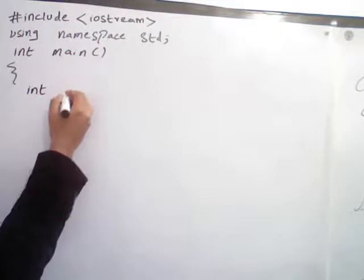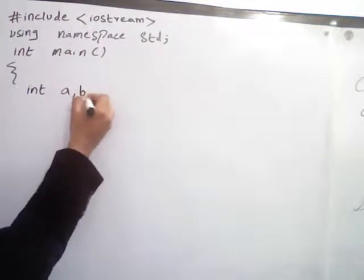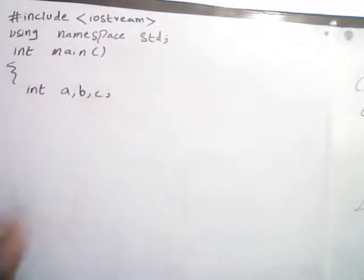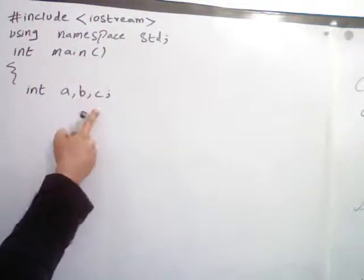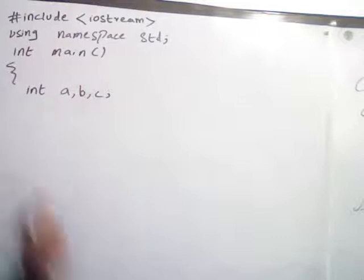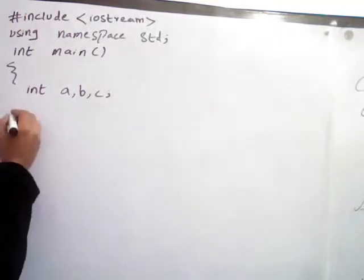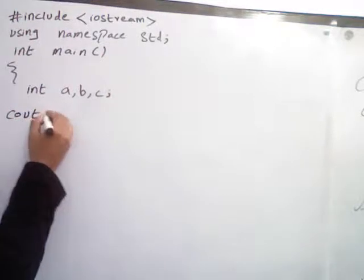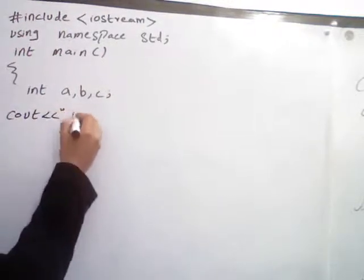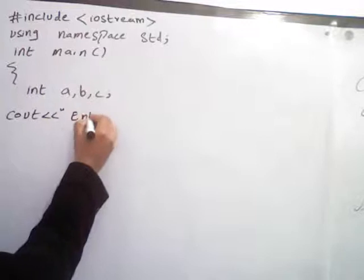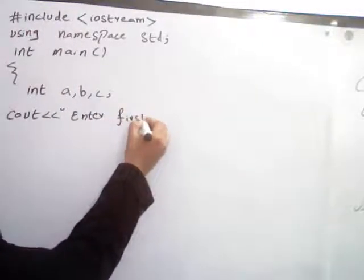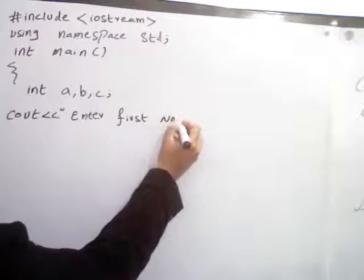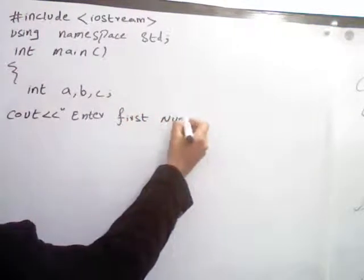Now display a message: cout 'Enter first number' and cin to get some input from a user into a. Cout displays a second message 'Enter second number'.